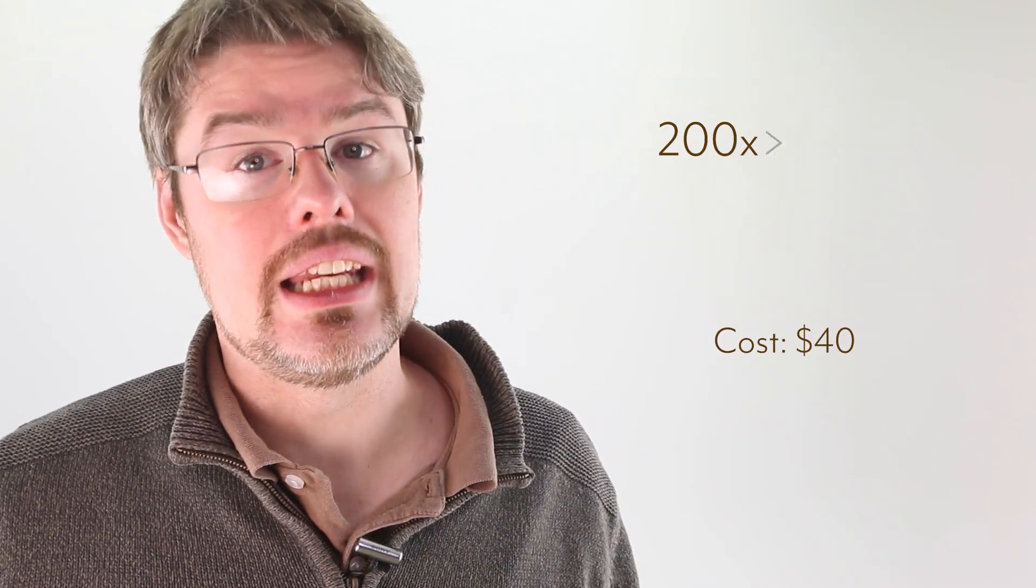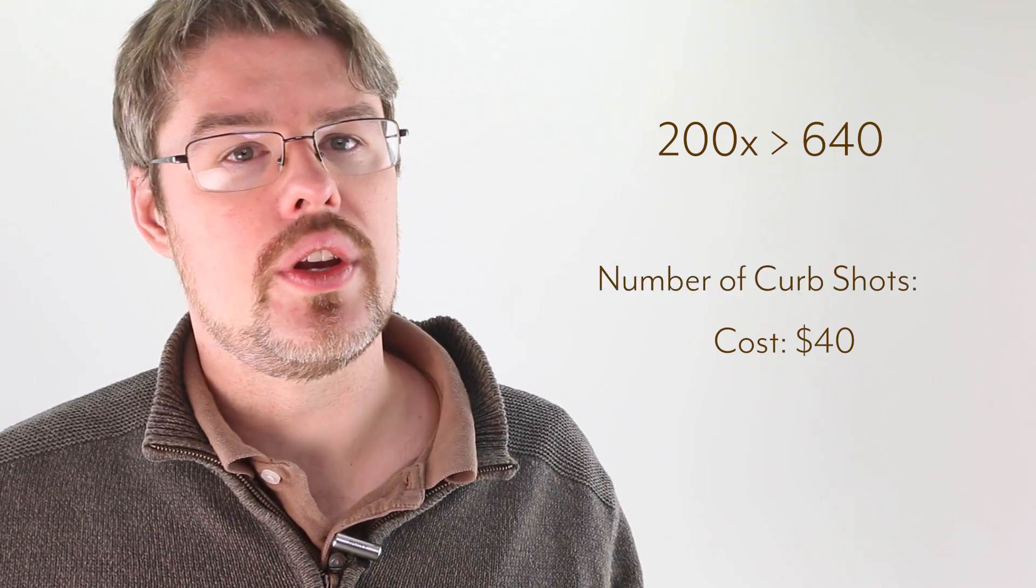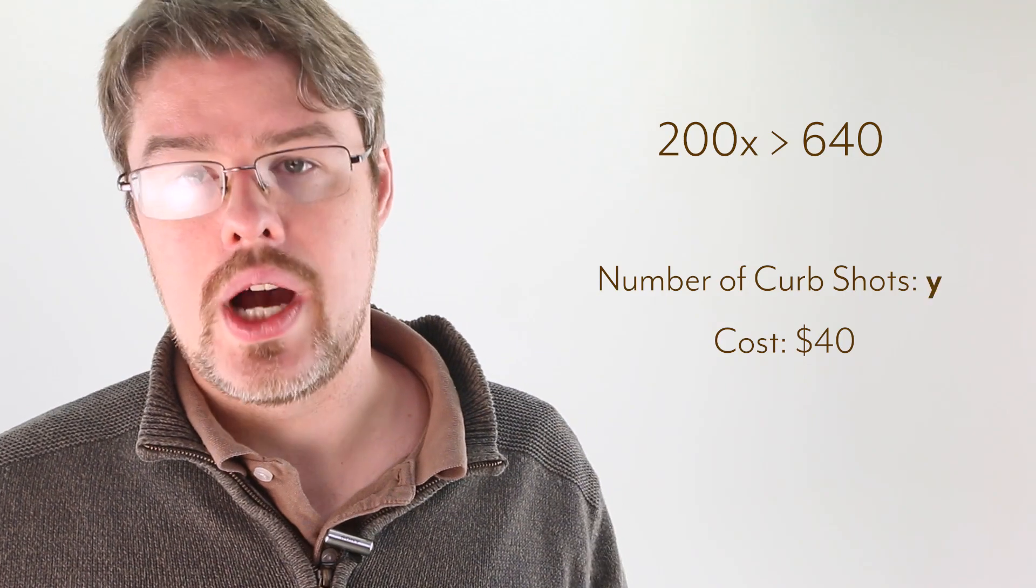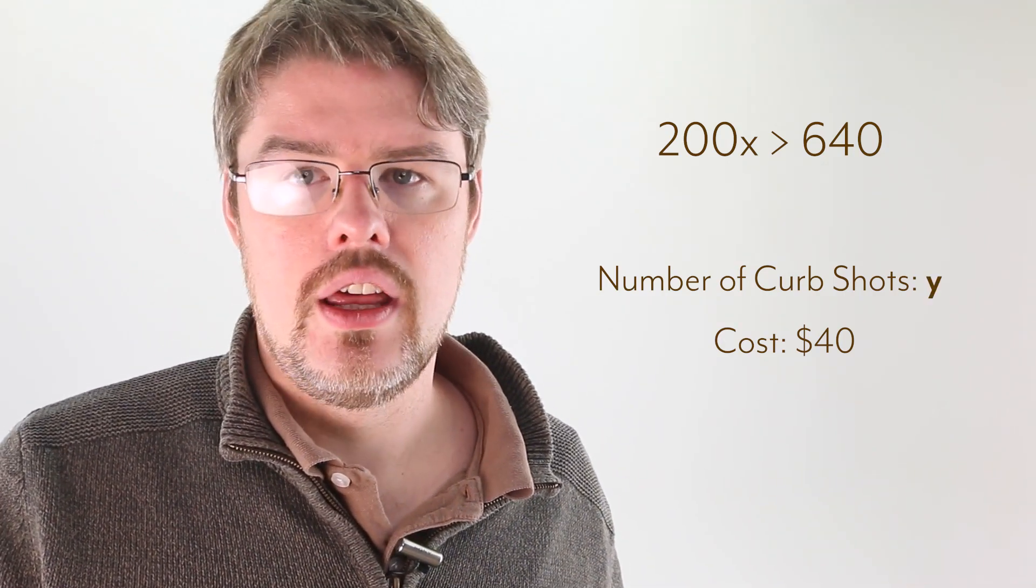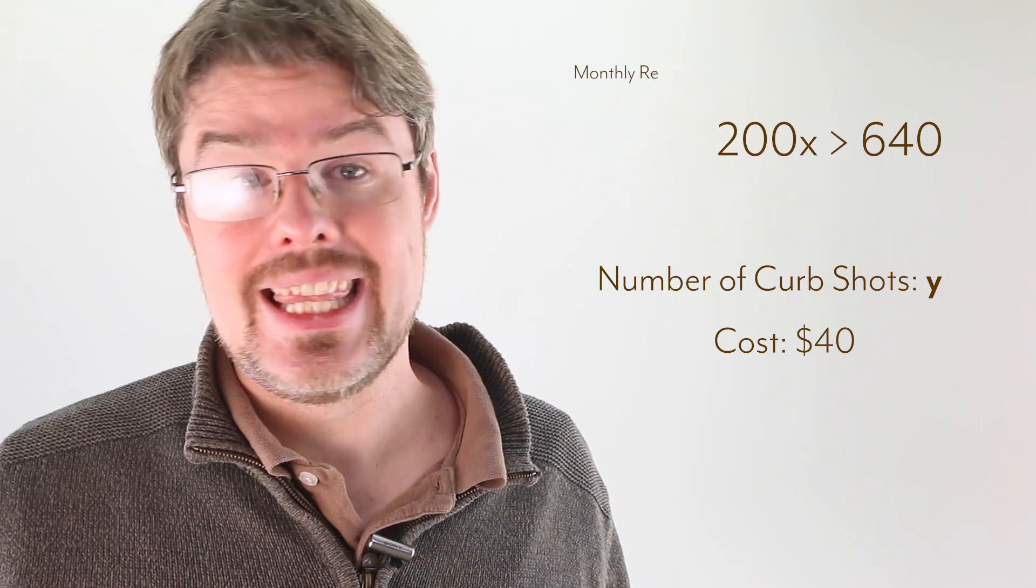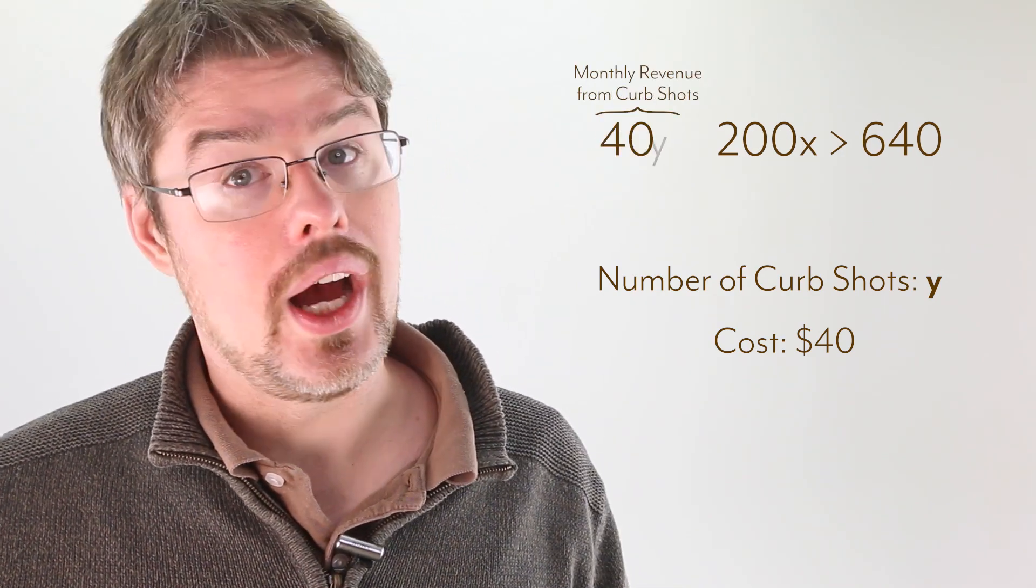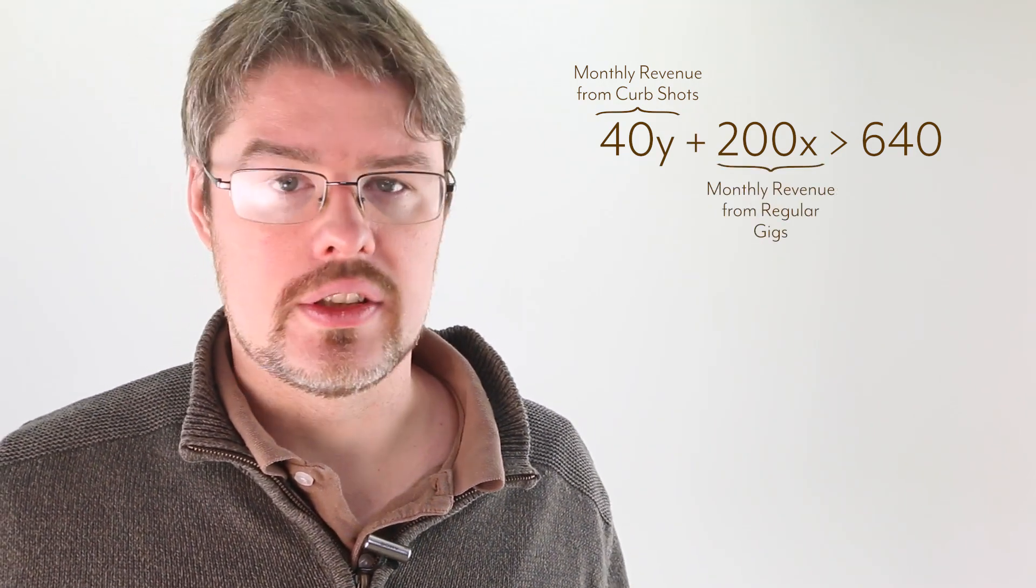Let's factor this into the inequality. Let me represent the number of curb shots with another variable. If we were using x before, it would make sense to use y now. So if I make $40 from a curb shot, then to figure out how much money I made that month from curb shots, that would be 40y. We then just add that to the amount I made from regular gigs, which looks like this.